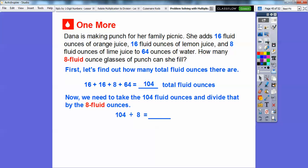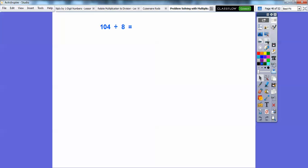So 104 divided by eight. 104 is the same as 80 plus 24. You can use any numbers that are easily divisible by eight. I like 80 because that's just 10.